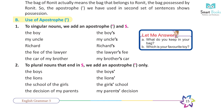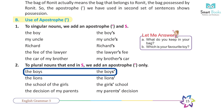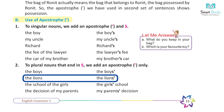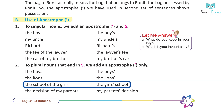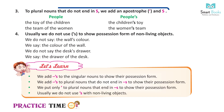Rule 2 — to plural nouns that end in 's', we add an apostrophe only. Examples: the boys → the boys'; the lions → the lions'; the school of the girls → the girls' school; the decision of my parents → my parents' decision.